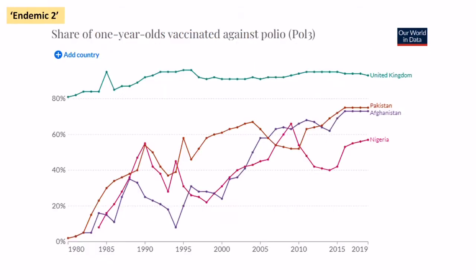Looking at the differences between countries like the UK and Pakistan: the UK has nearly 93% or above of one-year-olds vaccinated against polio, whereas Pakistan had just 75% in 2019.